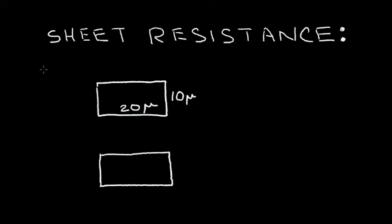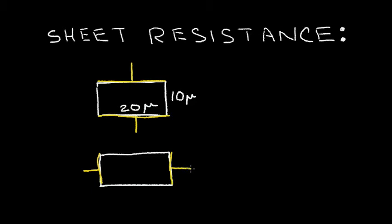Let's review resistor concepts by solving some simple problems. Let's first review sheet resistance. Here I have two materials, two identical rectangles, 10 microns by 20 microns. On the top rectangle, I want to connect along the top surface and form a resistor terminal in this direction, and I want to connect along the bottom surface and form a resistor terminal this way. On the bottom material, I want to contact to the left side and I want to contact to the right side. Let's call this resistor R1 and call this resistor R2.